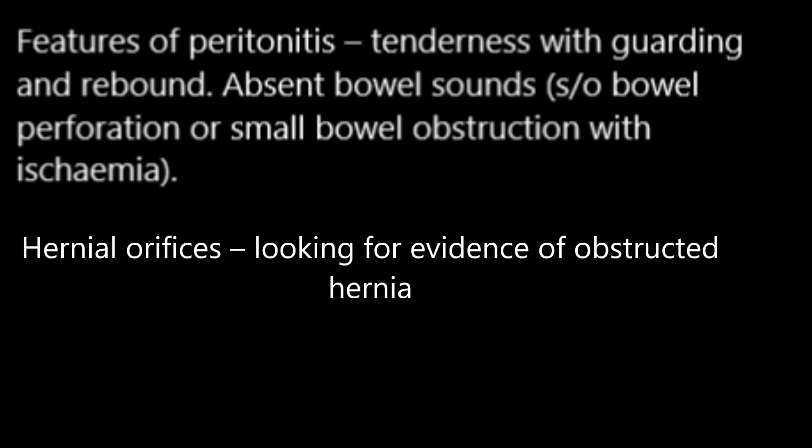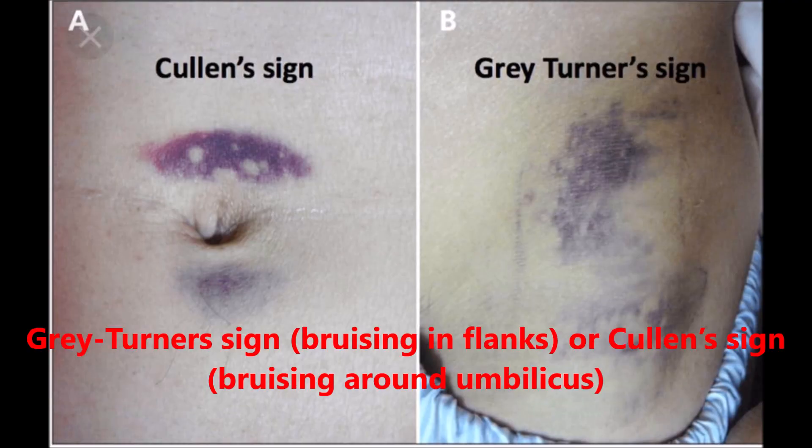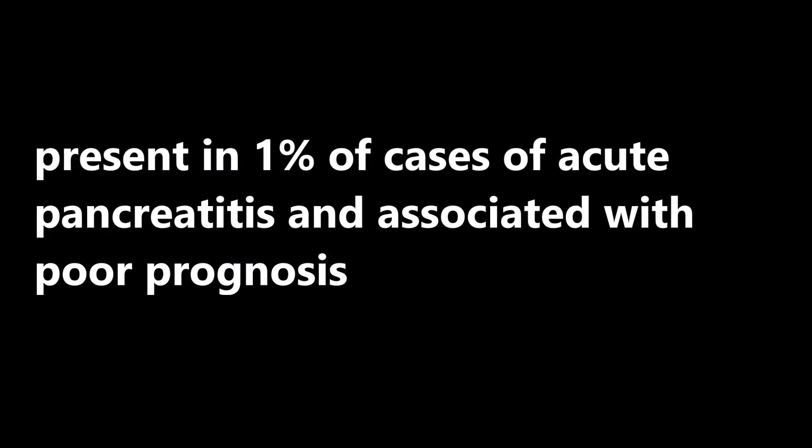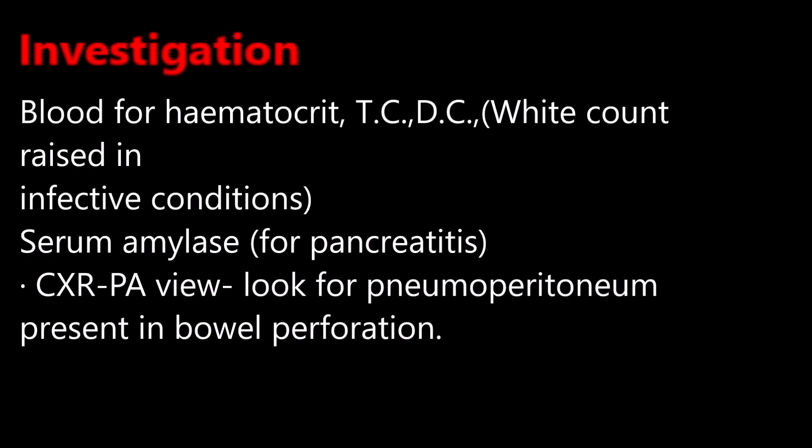Examine hernial orifices for evidence of obstructed hernia. Also look for Grey Turner's sign — bruising in the flanks — or Cullen's sign — bruising around the umbilicus — present in about one percent of cases of acute pancreatitis and associated with poor prognosis. In investigations, send blood for hematocrit, total count, differential count — white cell count raised in infective conditions. Check serum amylase for pancreatitis. Chest X-ray in PA view — look for pneumoperitoneum, present in bowel perforations.